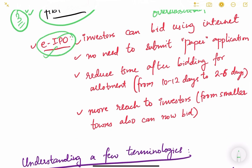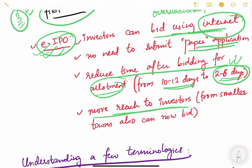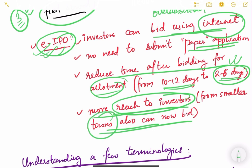The next concept is eIPO — electronic IPO. Initially, the IPO used to take place through a paper application form and people had to go to Mumbai to submit it. Now investors can bid using the internet. This reduces the allotment time from 10 to 12 days down to 2 to 6 days. It also provides more reach to investors, including people from small towns who can now invest from their hometown. It also saves paper costs, making it more efficient and eco-friendly.